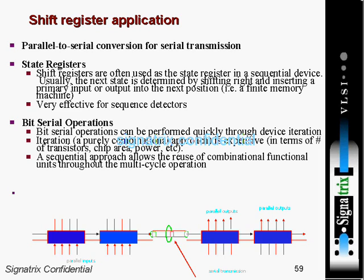Looking at one diagram: you are giving some parallel inputs, and after that you are transmitting those values in serial fashion, one bit at a time. After that you are receiving them one by one and giving parallel outputs. This is one sort of application of shift registers.